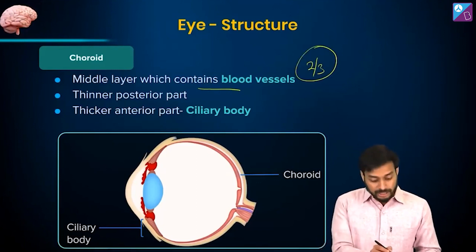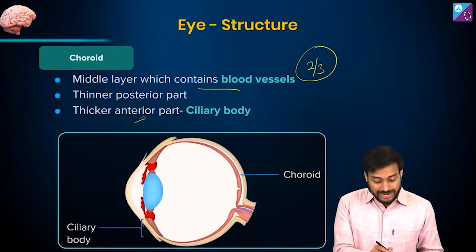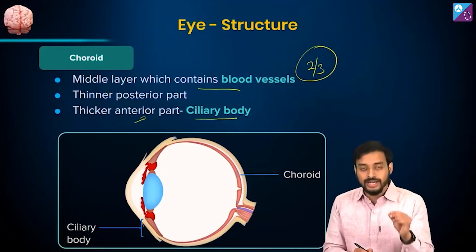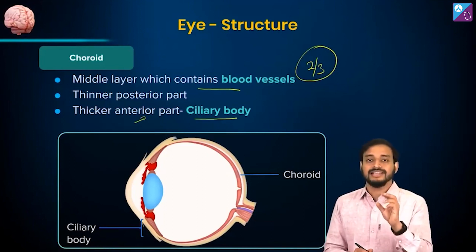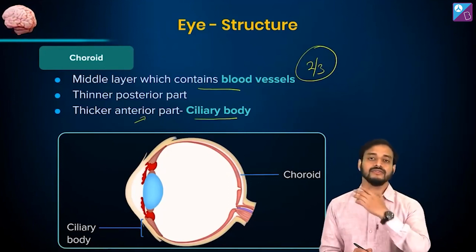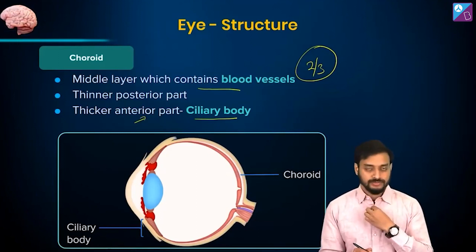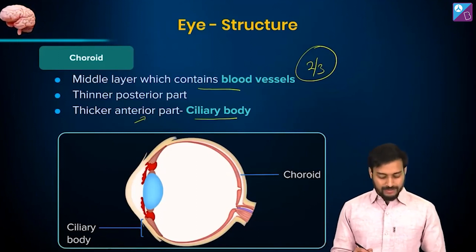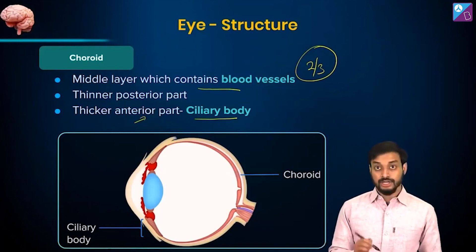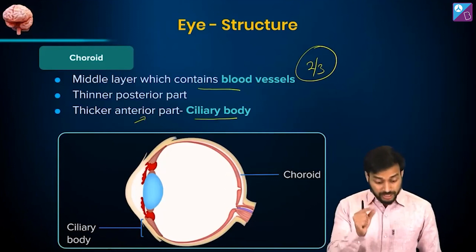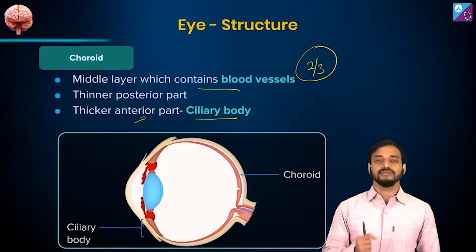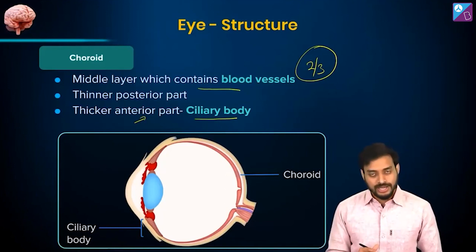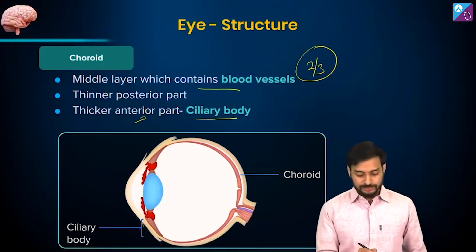If I talk about the anterior part, it's thicker and it forms the ciliary body. So the thicker part of this choroid forms the ciliary body, and this is very important. Take a look where I have labeled the ciliary body — you see it's the thicker anterior portion.